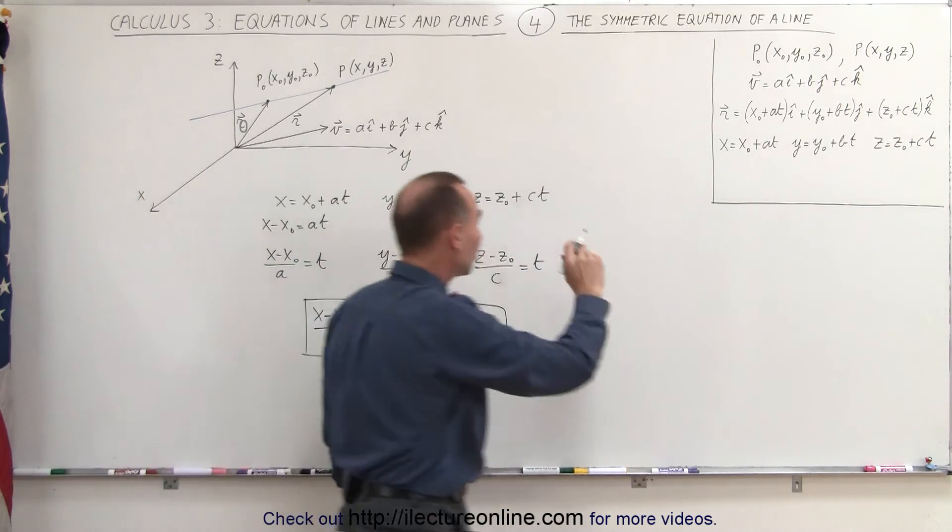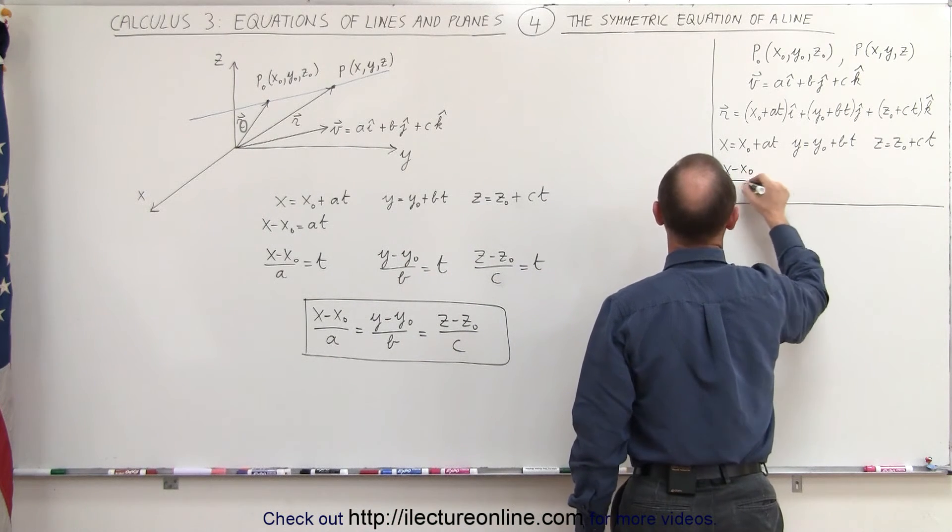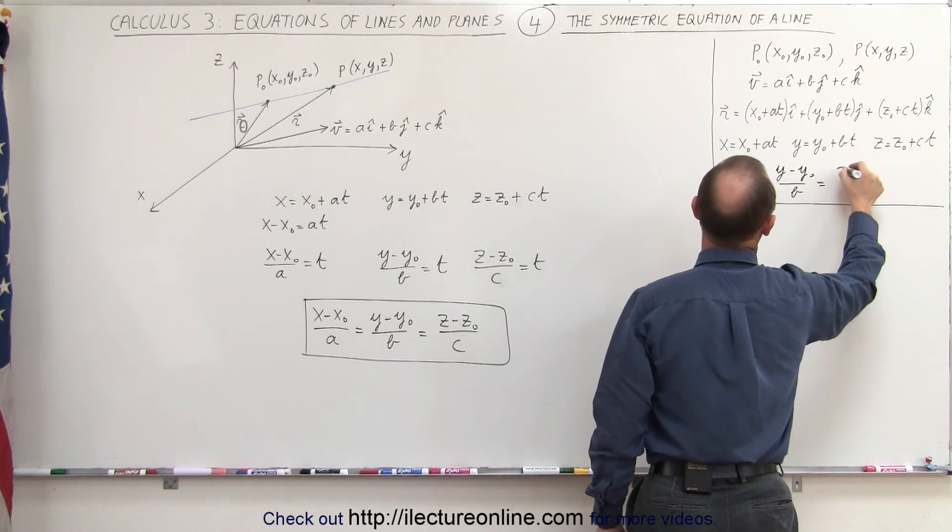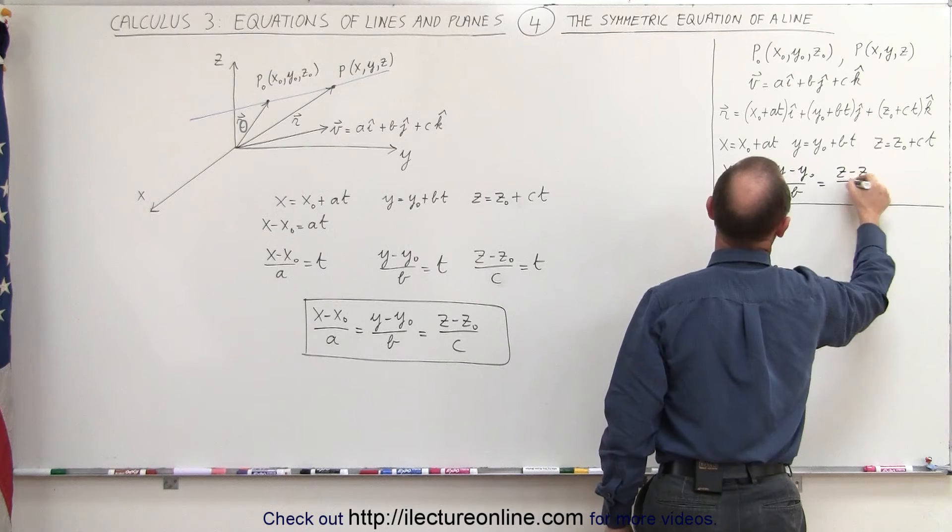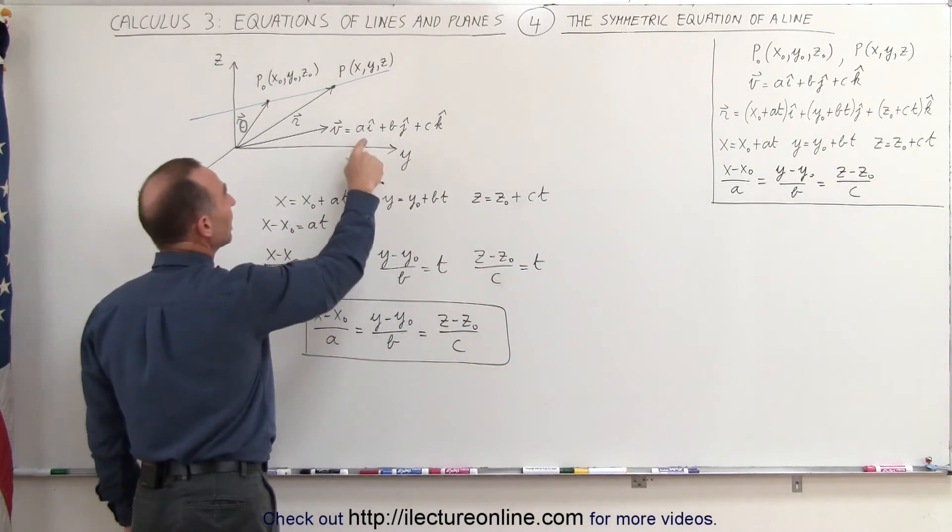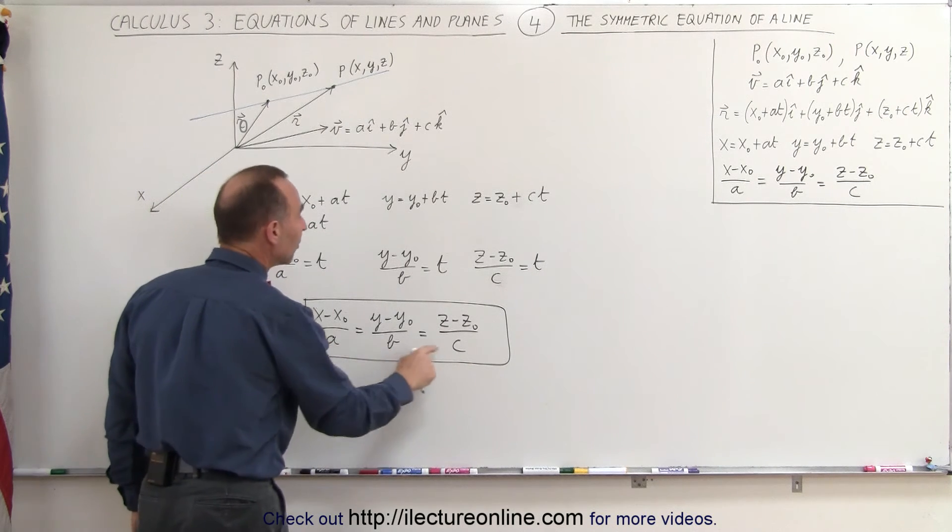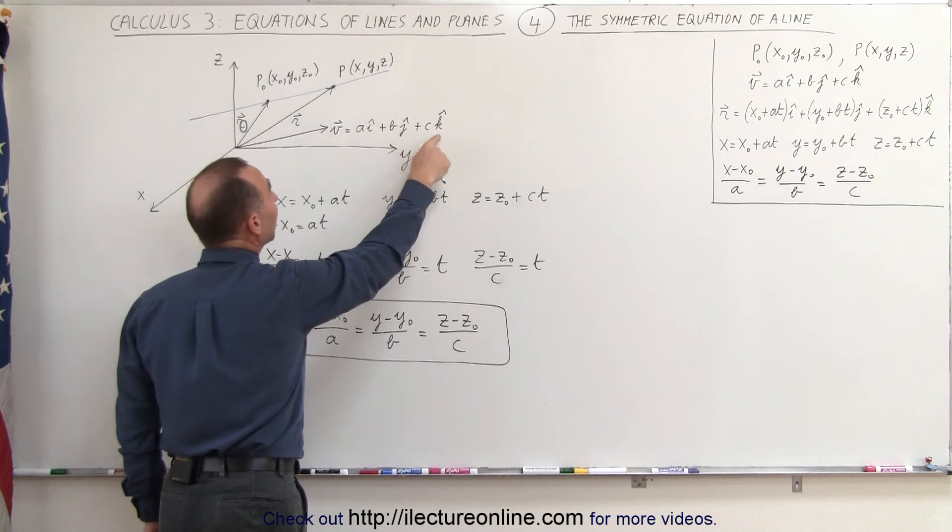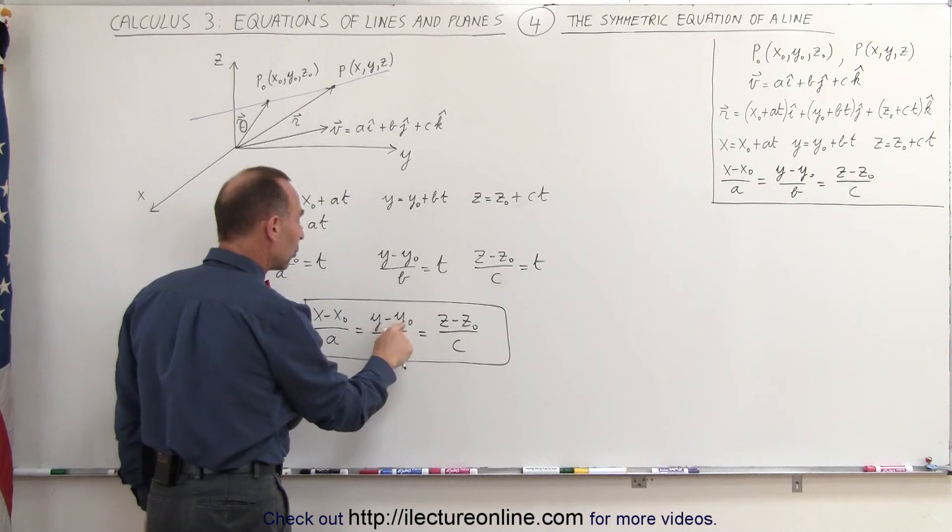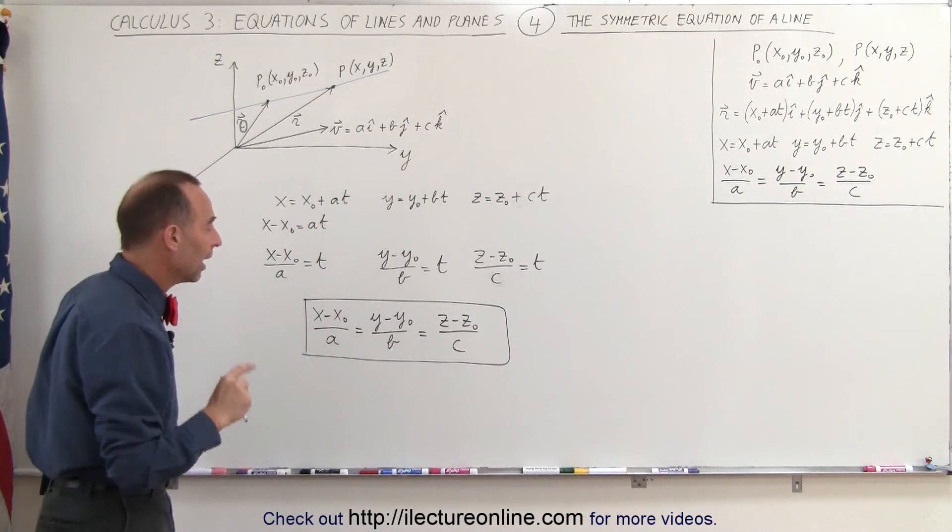I can then put that in the box over here, it's the third equation: x minus x sub naught divided by a equals y minus y sub naught divided by b equals z minus z sub naught divided by c. Now notice what this is: a, b, and c are the magnitudes of the i, the j, and the k component of the vector which is parallel to the line. x sub naught, y sub naught, z sub naught are the x, y, and z components of the known point on the line.